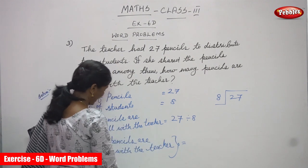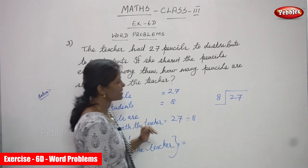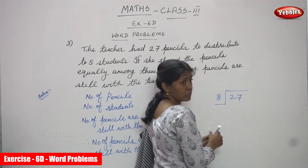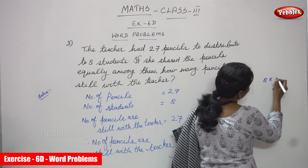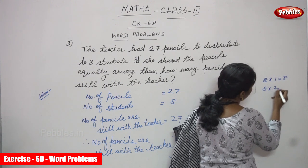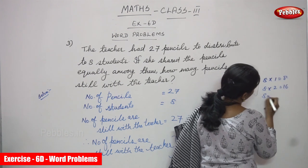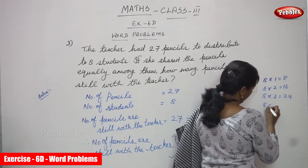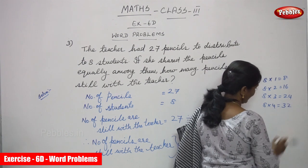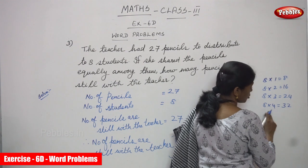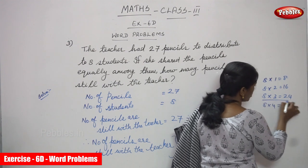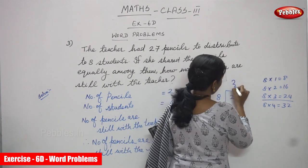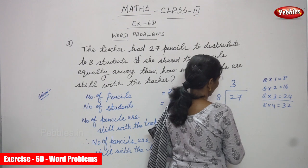So 27 is going to be divided by 8. Number of pencils still with the teacher — so 27 is the dividend and 8 is the divisor. 27 is going to be divided by 8. You must use the 8 times table: 8 ones are 8, 8 twos are 16, 8 threes are 24, 8 fours are 32. You should not use 32 because 32 is greater than the dividend. So 8 threes are 24 — you must use 3 in the quotient place.